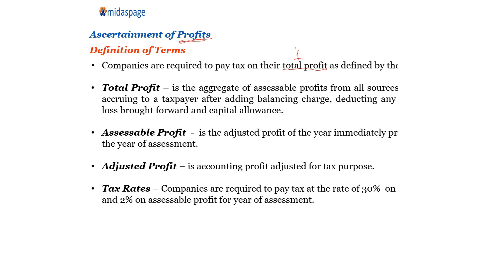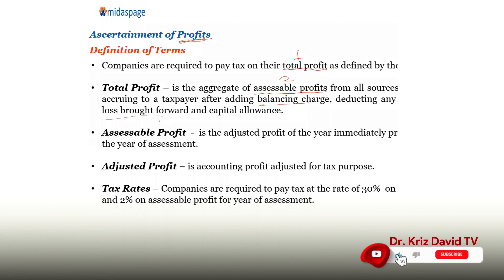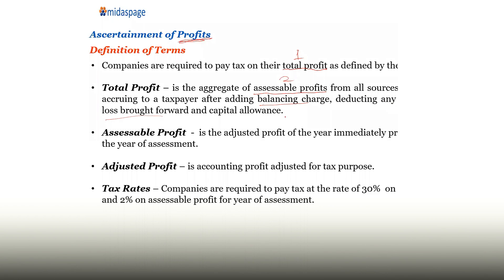So, what is total profits? Total profits is the aggregate of assessable profits — this is profit number two — from all sources of income accruing to a taxpayer, after adding balancing charge, deducting any unrelief loss brought forward and capital allowance. We are going to discuss balancing charge, unrelief loss, and capital allowance later.